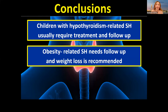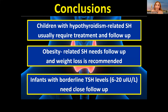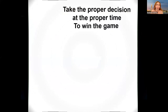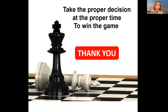Obesity-related subclinical hypothyroidism needs close follow-up and weight loss is recommended — don't rush to treat such patients. Finally, infants with borderline TSH from 6 to 20 need very close follow-up because the situation in babies is even more critical. It's very important to take the right decision at the proper time — which I think is even more challenging in children. Thank you very much for your attention.